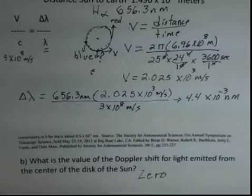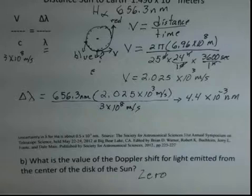the Doppler shift for the case of light coming from the center of the disk of the sun will be zero. We only get the Doppler shift in a situation where the source and observer are either approaching each other or moving away from each other. So if you have questions on this, be sure to ask your instructor.